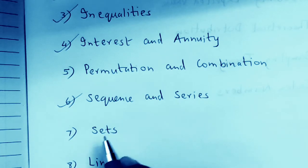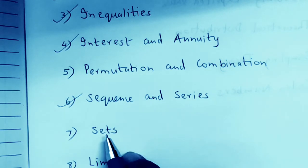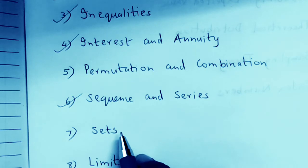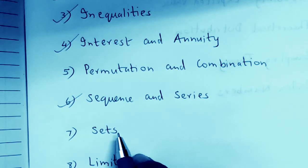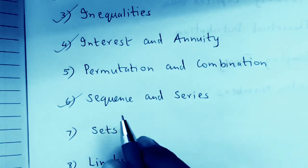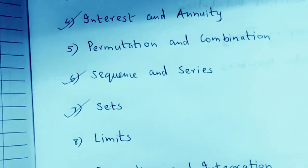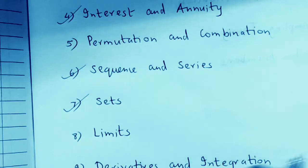Next comes Sets — numerical questions are rarely asked and it is mostly a theory-based chapter. Types of sets can be easily done. The laws of sets — distributive, commutative, De Morgan's — you can leave those as an option if you find them difficult. But at least understand union, intersection, and the addition formula, because that is useful in probability: A∪B = A + B − A∩B, and likewise for three sets.